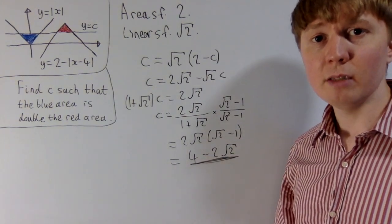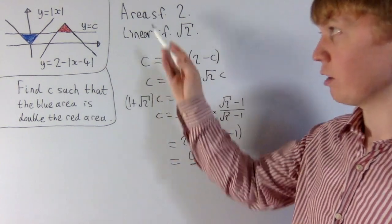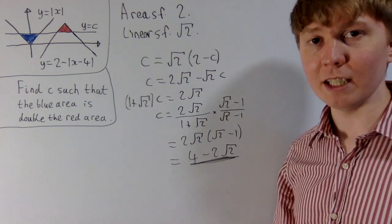So this shows that c is equal to 4 minus 2 root 2. I think this method is slightly nicer because we're only solving a linear equation here, but then you do have to spot that we've got the area scale factor, you've got to spot the similar triangles, and then you've got to work out the linear scale factor.